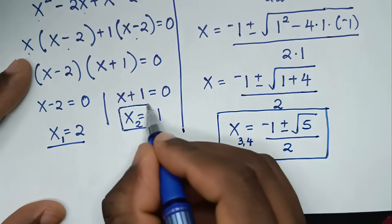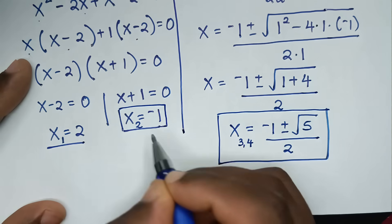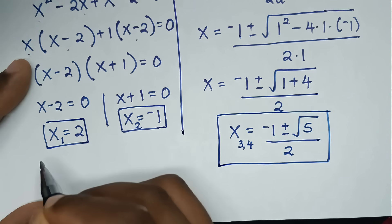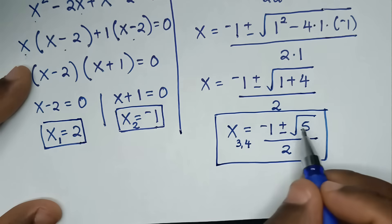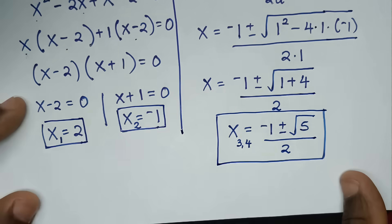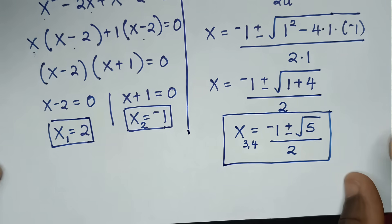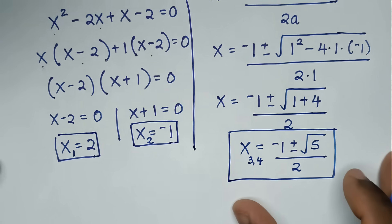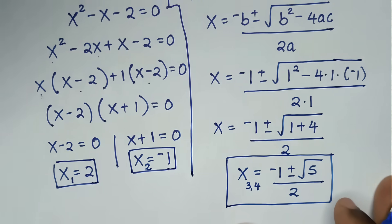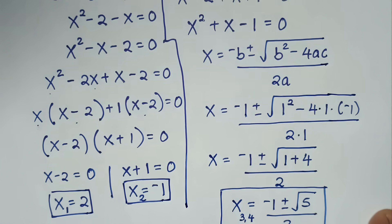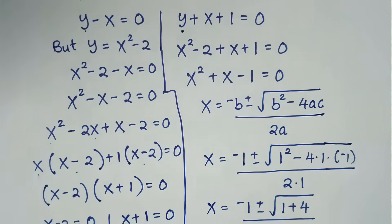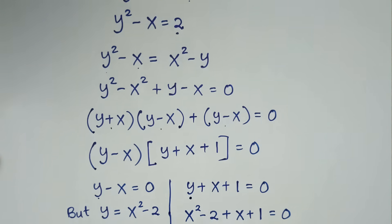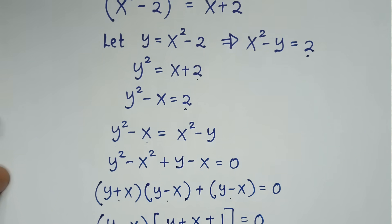x equals negative 1, x equals 2, and two solutions x equals negative 1 plus or minus square root of 5 over 2. Thank you for watching. Don't forget to subscribe to my channel and see you in the next video.